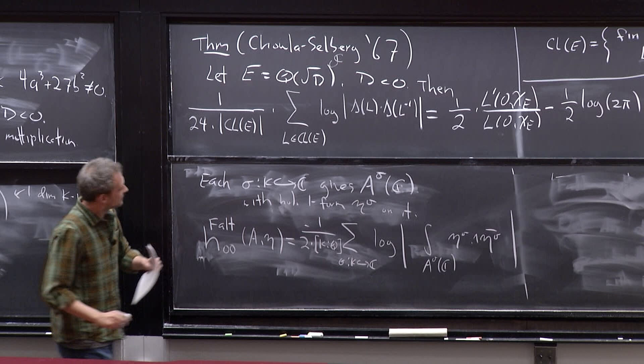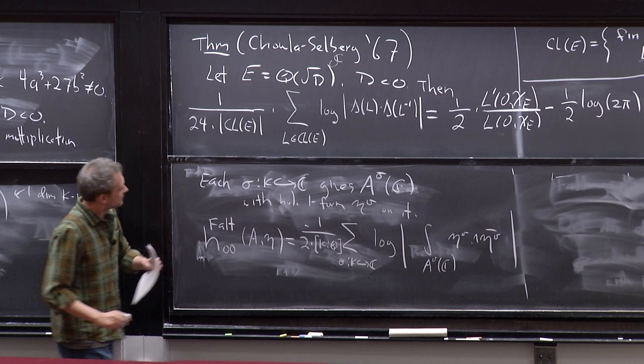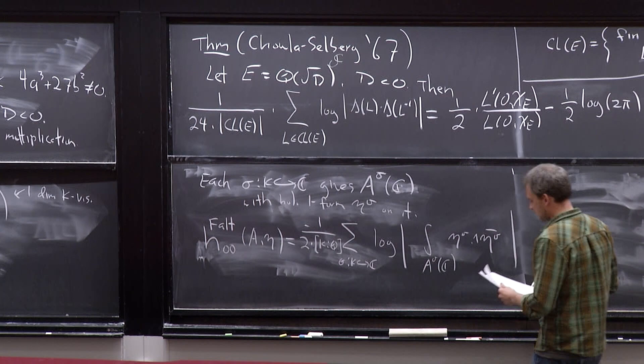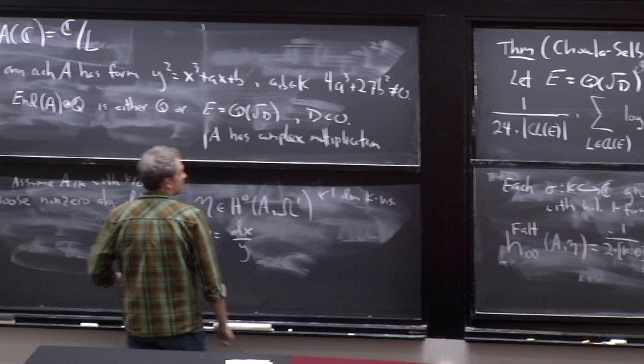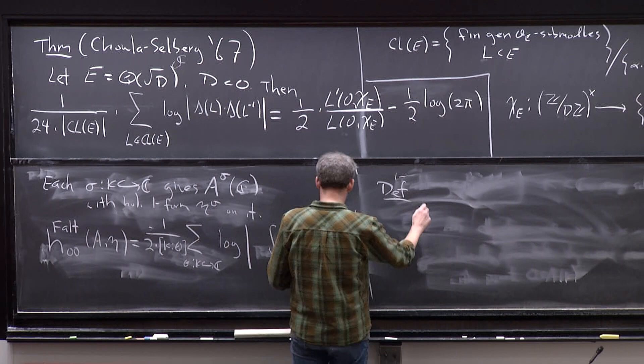This is almost the Faltings height, except it visibly depends on the choice of eta. So we correct this by adding another term that removes the dependence on eta. To do that you need to normalize eta, which is very difficult just talking about elliptic curves over fields. You really need a theory of elliptic curves at least over the ring of integers of your number field K. And once you've opened that box, you might as well work over an arbitrary scheme.